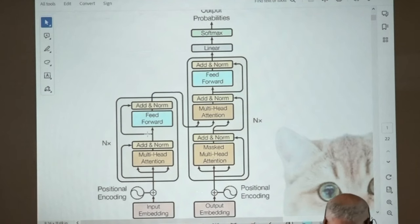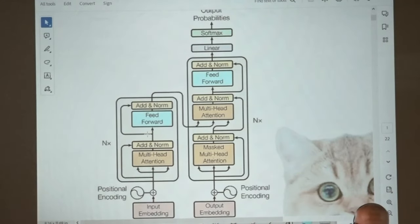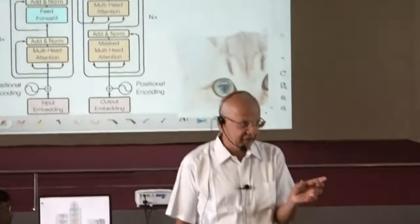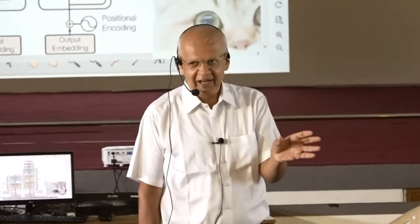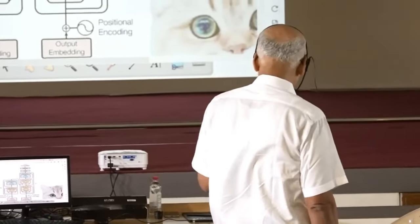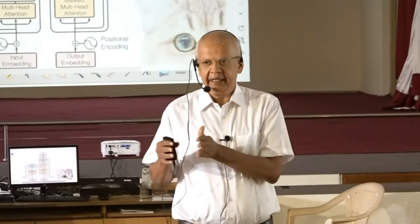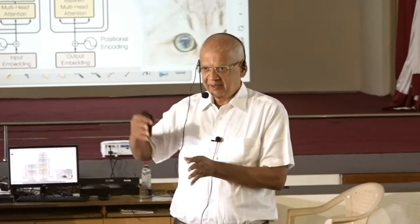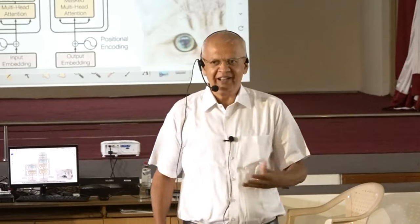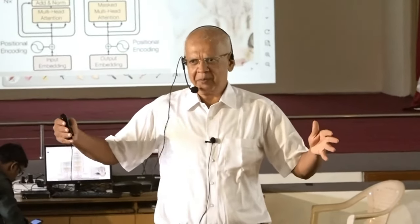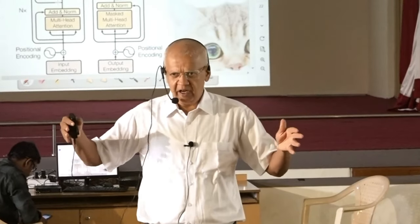Let's start the journey from the bottom. There is something called input embedding. If you are given a sentence — what does ChatGPT do? It generates the next part based on whatever you have given as a prompt or query. So that is the input. Unlike an RNN where input is taken piece by piece — which is why RNN is not very GPU friendly and lacks parallelism — the attention network will take the entire input, whatever be the size.